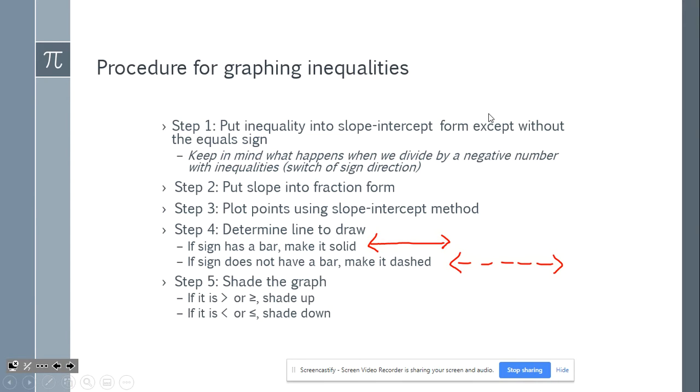Next, you'll want to shade the graph. If your inequality sign is a greater than or a greater than or equal to sign, you will shade up. If your inequality sign is a less than or less than or equal to sign, you will shade down. Now, keep in mind, you always want to look at where y is on the graph. I'll show you what I mean by that as we do some examples.